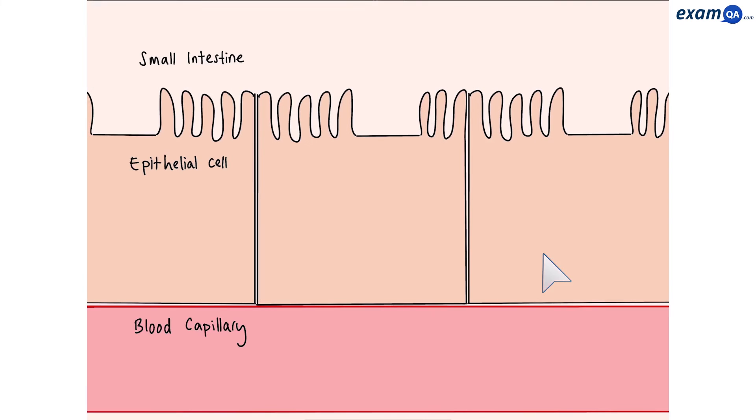Okay, so here we have the blood capillary, epithelial cell and small intestine. Now in the small intestine, you can find glucose, amino acids and sodium ions. These are all contents of the food that the person ate.